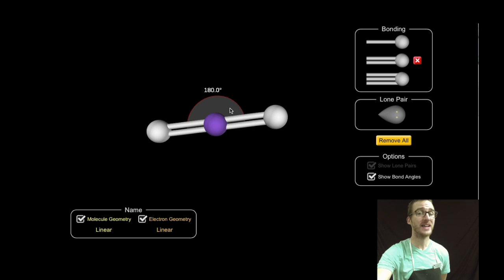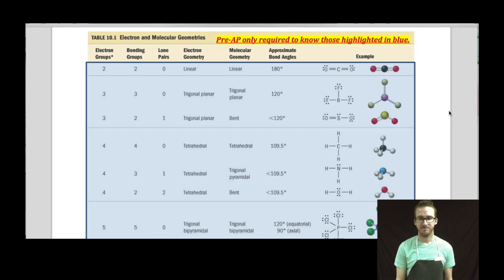So the electron geometry here is 180 degrees. The molecular geometry or the geometry of the atoms is also linear. The molecular geometry and the electron geometry will be the same anytime that your central atom has no lone pairs of electrons. Now, you don't get a nifty simulation on the test. So it's just going to take some practice with a reference chart like the one in your notes to help you get comfortable with what the different geometries are going to be.